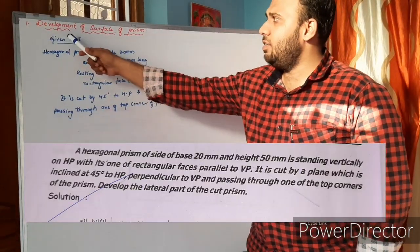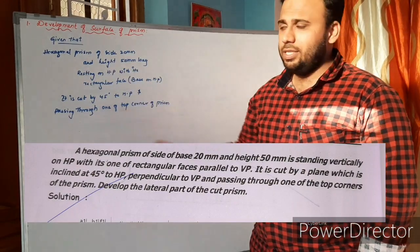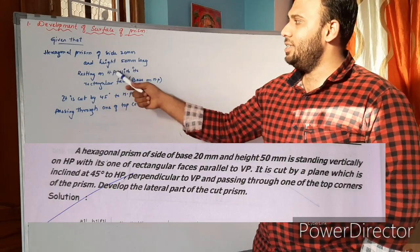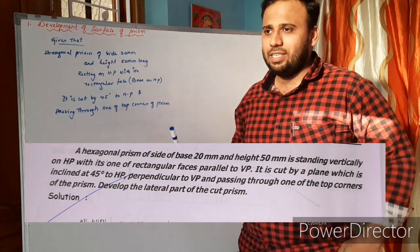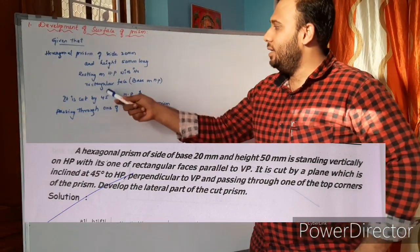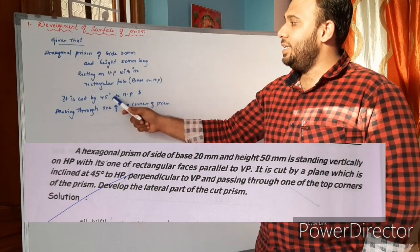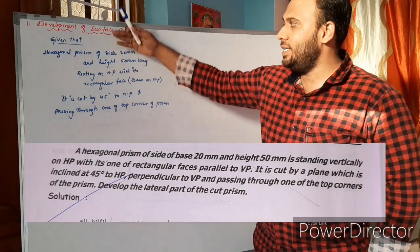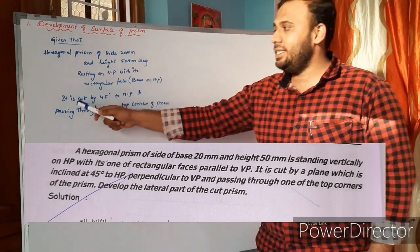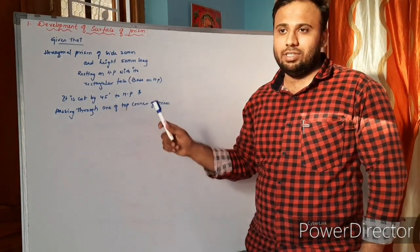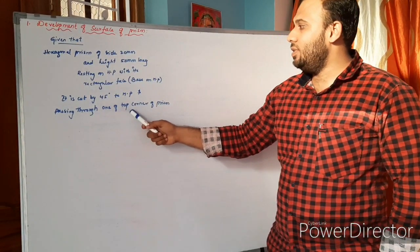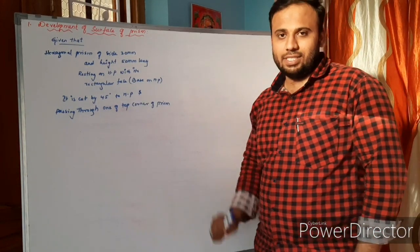The first question is development of surface of prism. The given data: hexagonal prism with side of base 20mm and height 50mm, resting on HP with its rectangular face. It is cut by 45 degrees to HP and passing through one of the top corners of the prism. Let's draw the prism first.